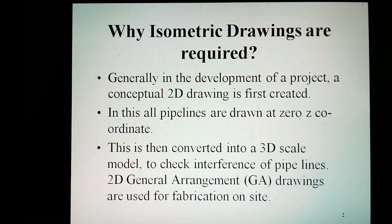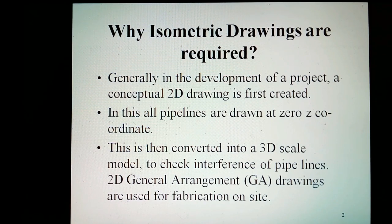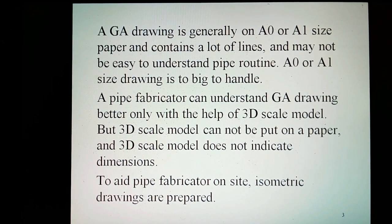Why are isometric drawings required? Generally, in the development of a project, a conceptual 2D drawing is first created, in which all pipelines are drawn at zero Z coordinate. This is then converted into a 3D scale model to check interference of pipelines. 2D general arrangement GA drawings are used for fabrication on site. A GA drawing is generally on A0 or A1 size paper and contains a lot of lines and may not be easy to understand pipe routing.